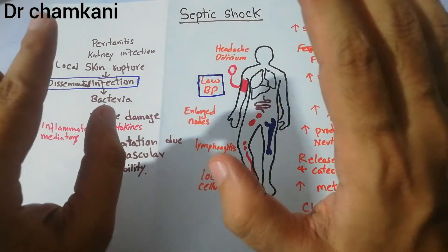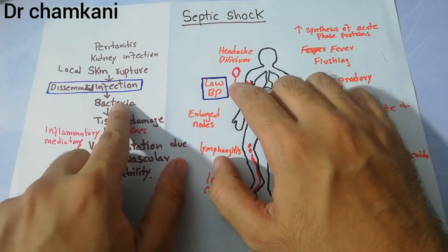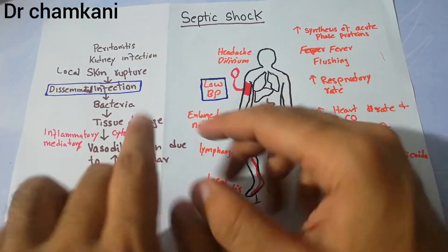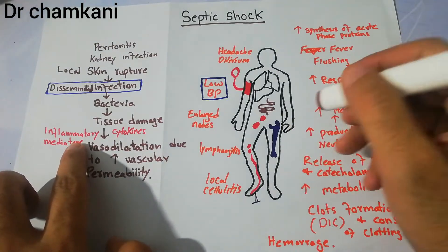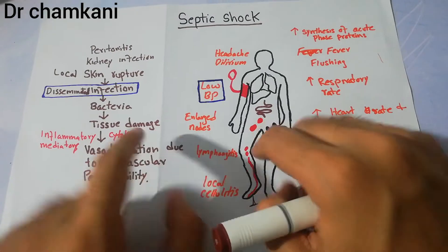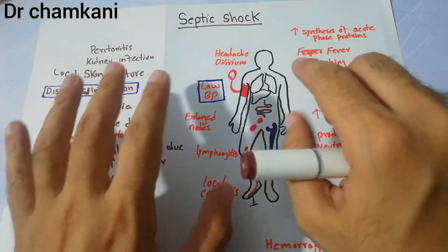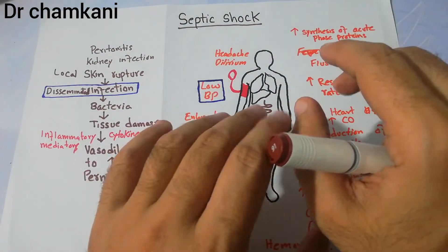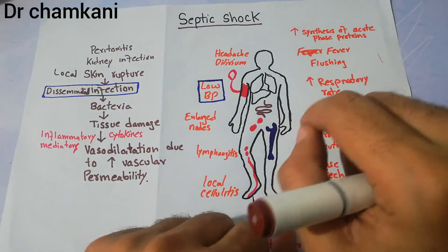Initially there will be no shock — only bacteria or infection in the blood. Then they will go to the tissue and start releasing different inflammatory mediators and cytokines in different parts of the body. There are many cytokines and inflammatory mediators responsible for different actions; some are beneficial and some cause harm, but they are released during infection and inflammatory processes.